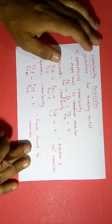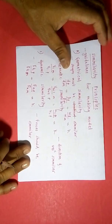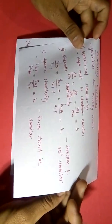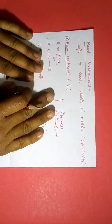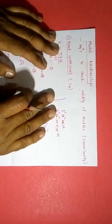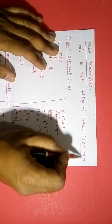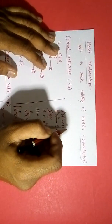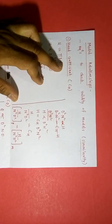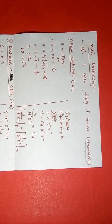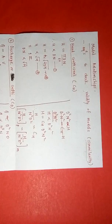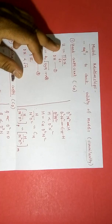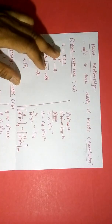To check whether our model is similar to the prototype, we use model relationships. These are equations to check the validity or similarity of a model with the prototype. There are three coefficients: the head coefficient, the discharge coefficient, and the power coefficient.